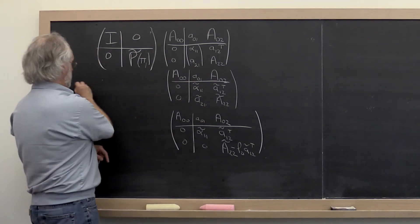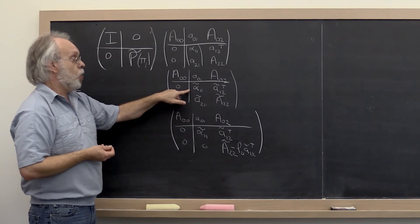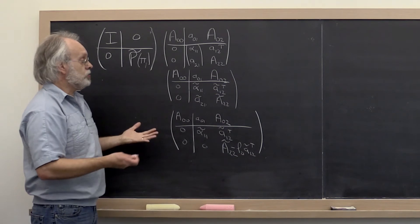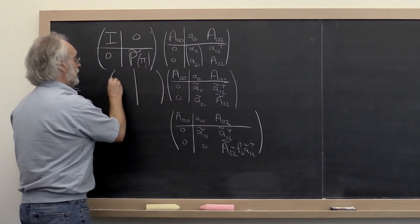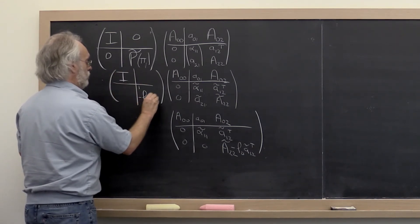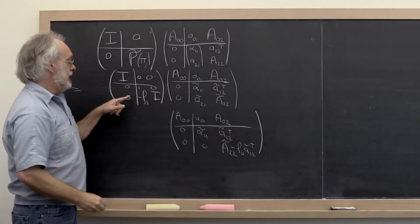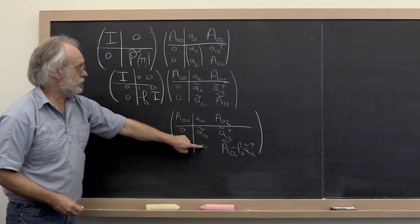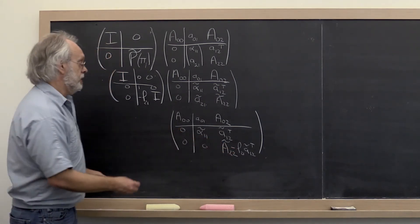That then leaves us with a matrix that looks like this, where now we can look at that entry and compute the Gauss transform that places zeros right here. That Gauss transform would look something like this. When you apply it to this matrix, it introduces zeros there and subtracts a rank-1 update from matrix A_2-tilde.